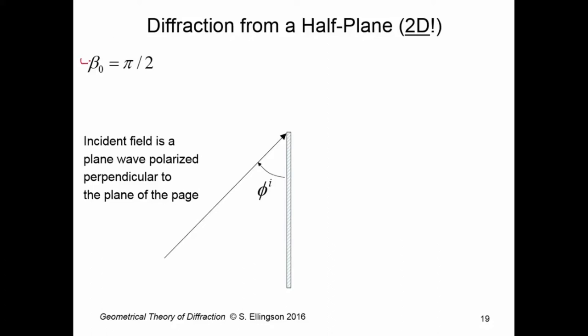First, note that beta naught is π over 2, that is, this ray is arriving in the plane perpendicular to the edge tangent. This is a uniform plane wave, so ρ super c goes to infinity.